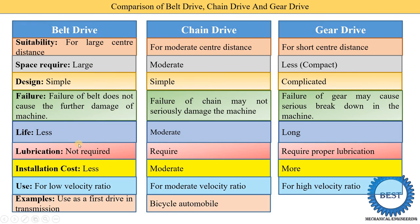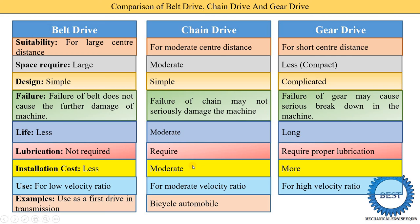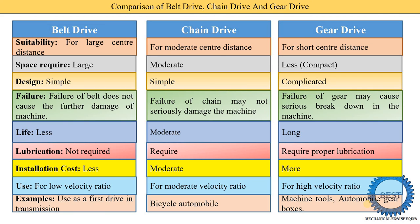Belt drive is used as the first drive in any transmission system. Chain drive is used in bicycles as well as various automobile vehicles. Gear drive is used in machine tools and automobile gearboxes — in our vehicles we shift the gear, and the change occurs in the gearbox where a number of gears are present, used in bikes, four-wheelers, tractors, and various machine tools of mechanical engineering.